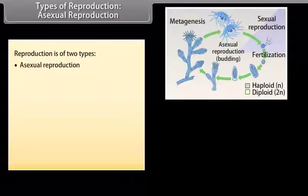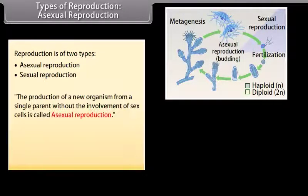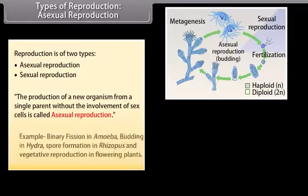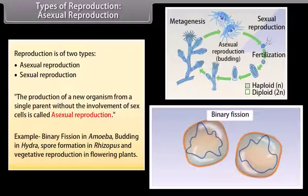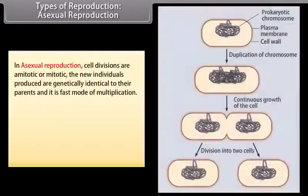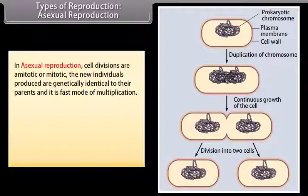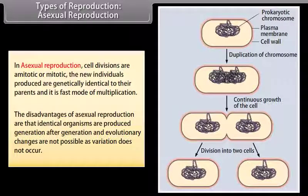Types of reproduction: Reproduction is of two types — asexual reproduction and sexual reproduction. The production of a new organism from a single parent without the involvement of sex cells is called asexual reproduction. Examples include binary fission in amoeba, budding in hydra, spore formation in Rhizopus, and vegetative reproduction in flowering plants. In asexual reproduction, cell divisions are mitotic, the new individuals produced are genetically identical to their parents, and it is a fast mode of multiplication. The disadvantages are that identical organisms are produced generation after generation, and evolutionary changes are not possible as variation does not occur.